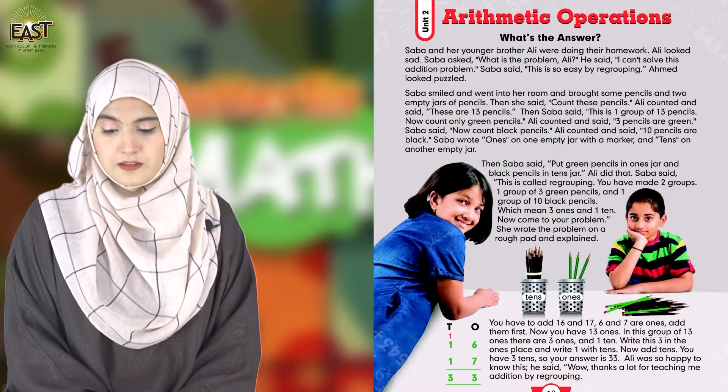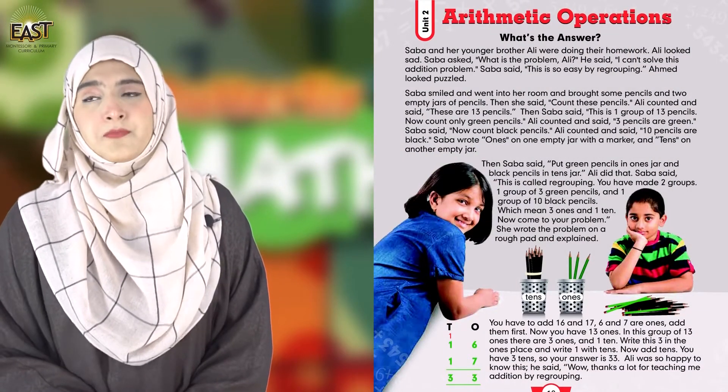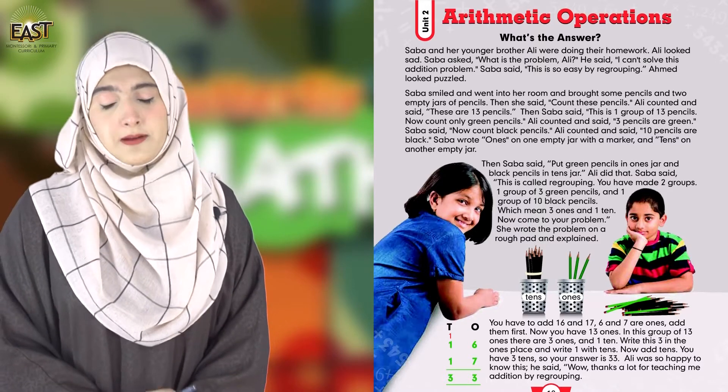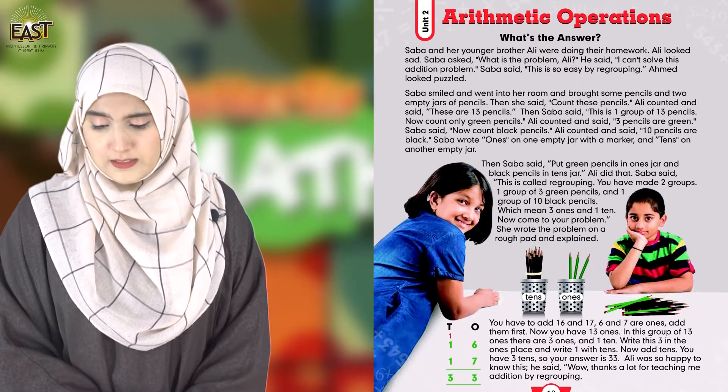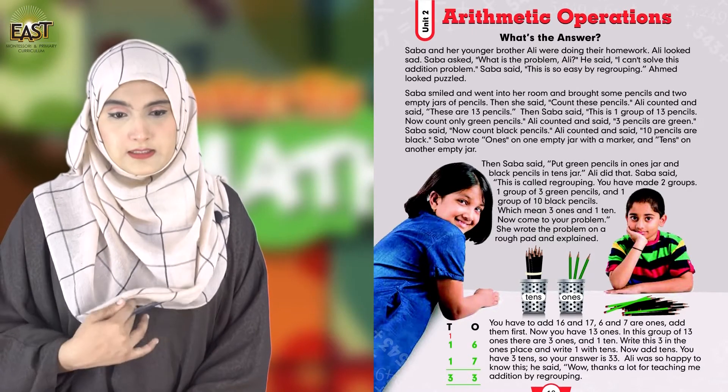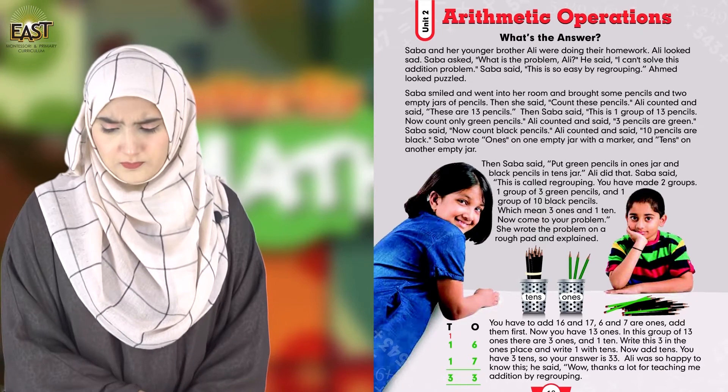As you all know, this is our math subject. In our last class we were doing the revision of chapter number one, and alhamdulillah we are done with that. Today we are going to start the revision of chapter number two. Please take out your books, page number 18. Chapter number two is all about arithmetic operations. Arithmetic is basically a branch of mathematics, just like algebra.